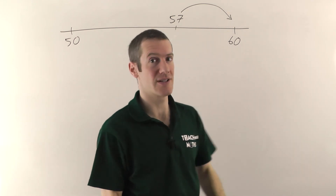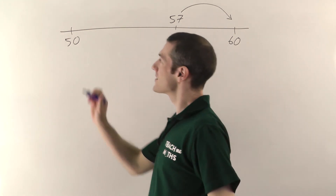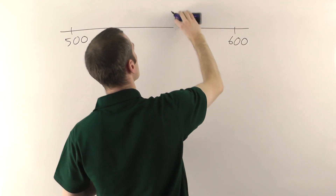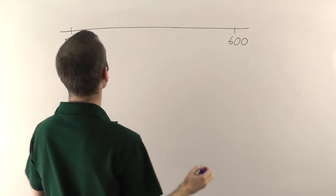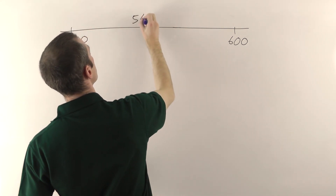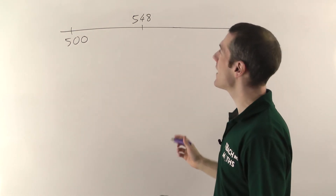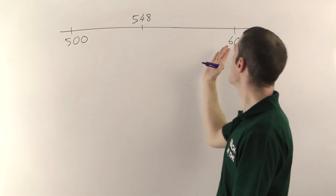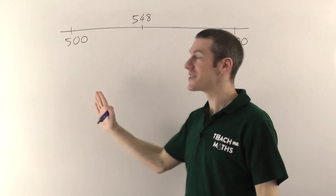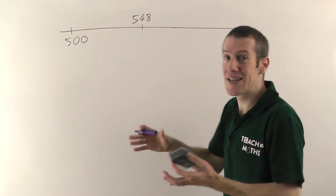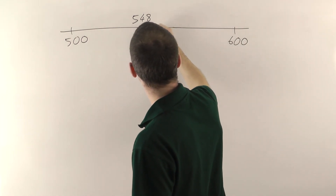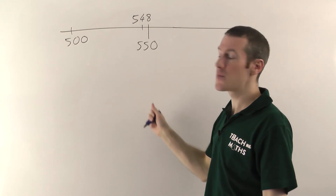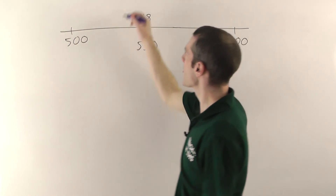So if we were to round that number to the nearest 10, it would round up to 60. That's essentially what rounding is. Now I'm going to make it a bit harder by making the numbers bigger — 500 and 600. Let's have 548. The question is: rounding to the nearest hundred, is it closer to 500 or 600? The key giveaway is the halfway point of 550. Since 548 is less than 550, it's going to round down to 500.